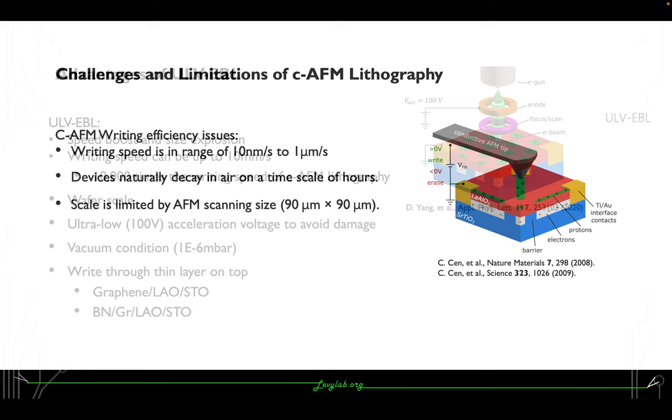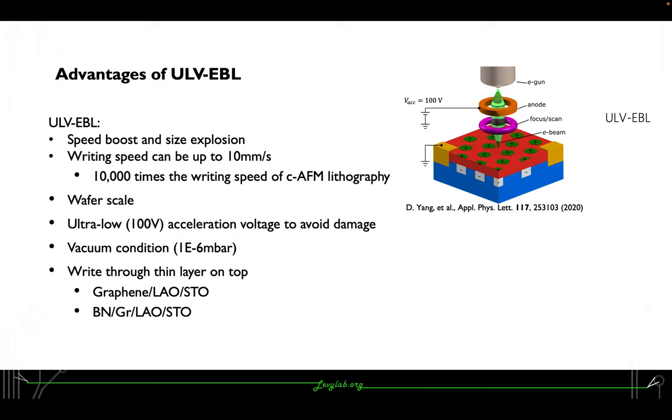To overcome these limitations, we introduce ultra-low voltage electron beam lithography, which introduces speed boost and size explosion to nanostructure patterning at the LAO/STO interface. The writing speed can be up to 10 mm per second, which is 10,000 times the writing speed of conductive AFM lithography, and the writing scale can be as large as a wafer.